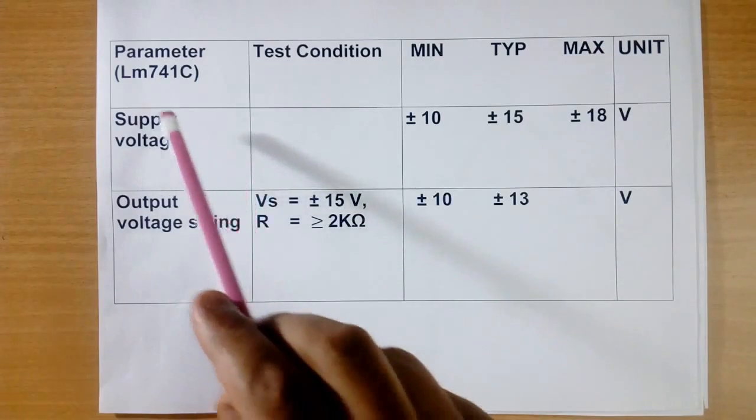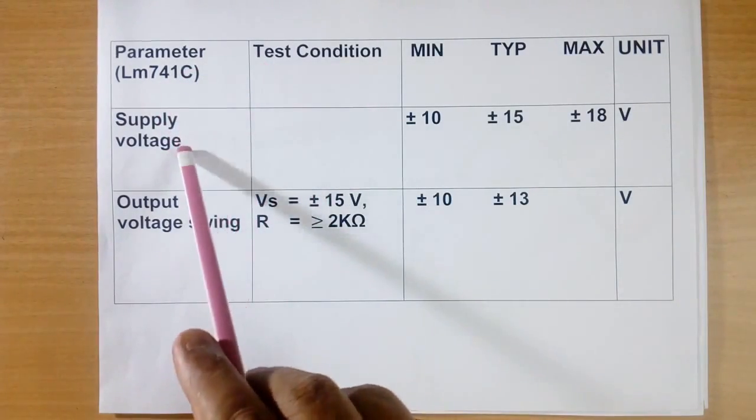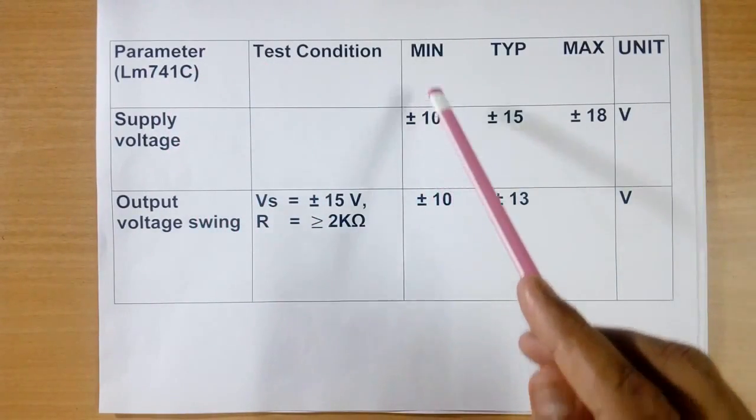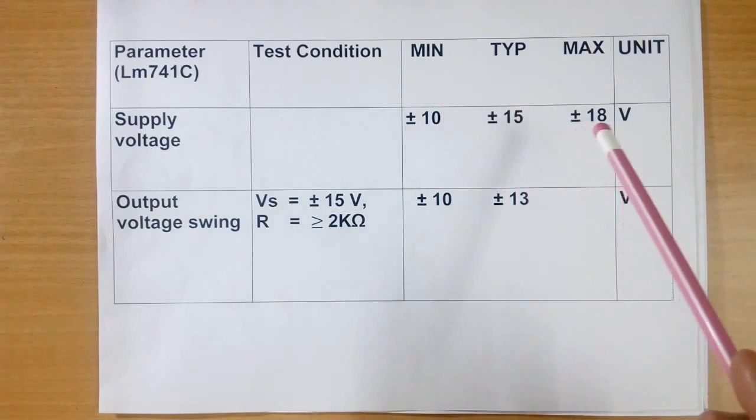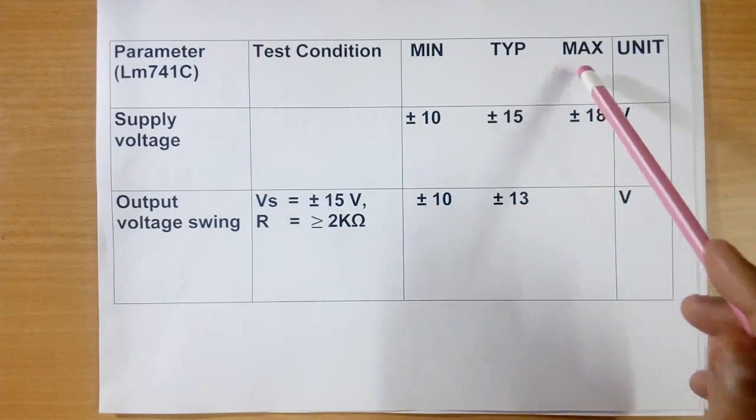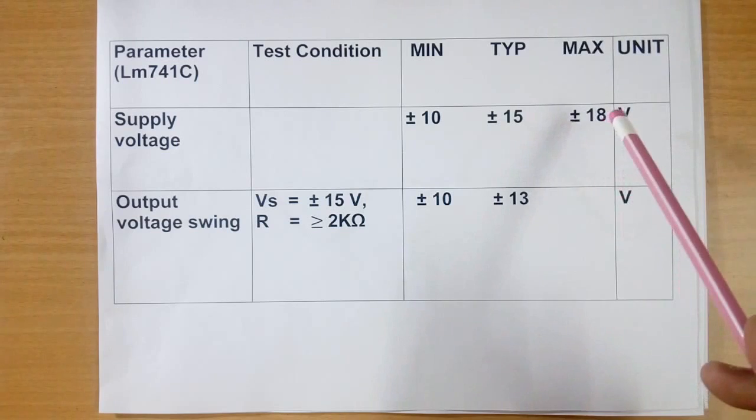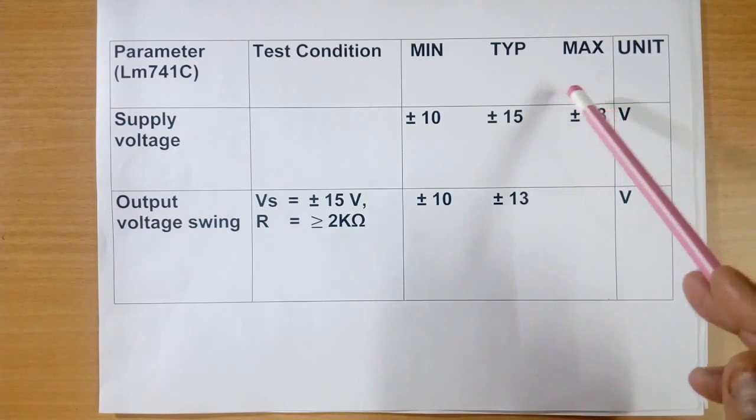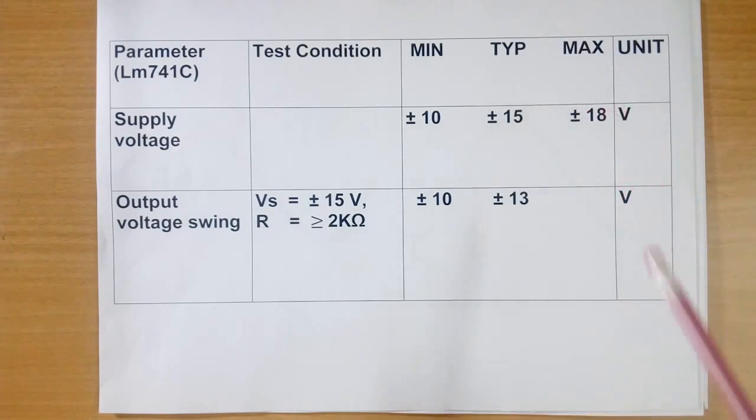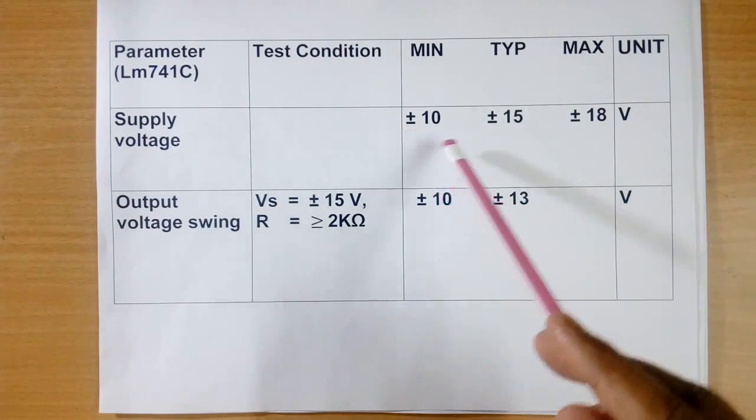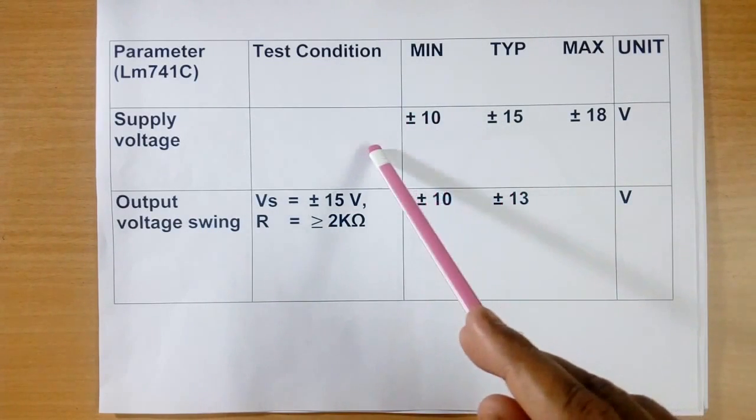This is taken from the data sheet of 741C. Supply voltage shown is plus minus 10 volt minimum and plus minus 18 volt maximum. This means if we give more than plus minus 18 volt, IC may fail. If we give less than plus minus 10 volt, IC may not work.